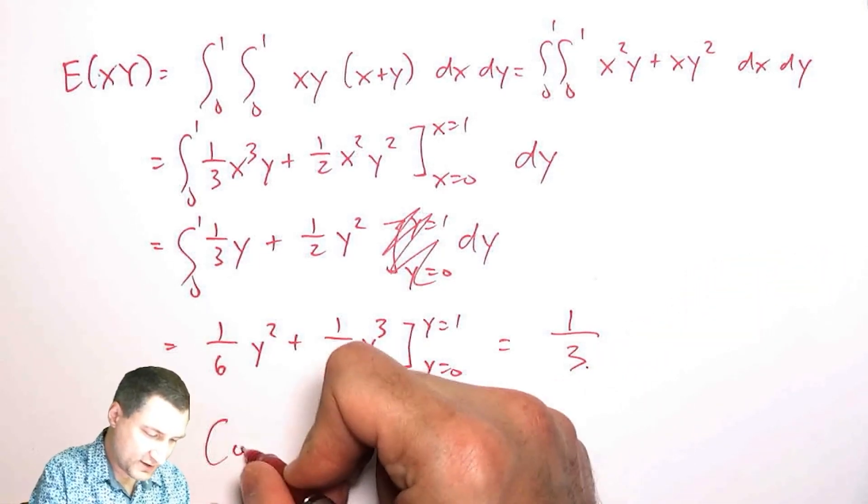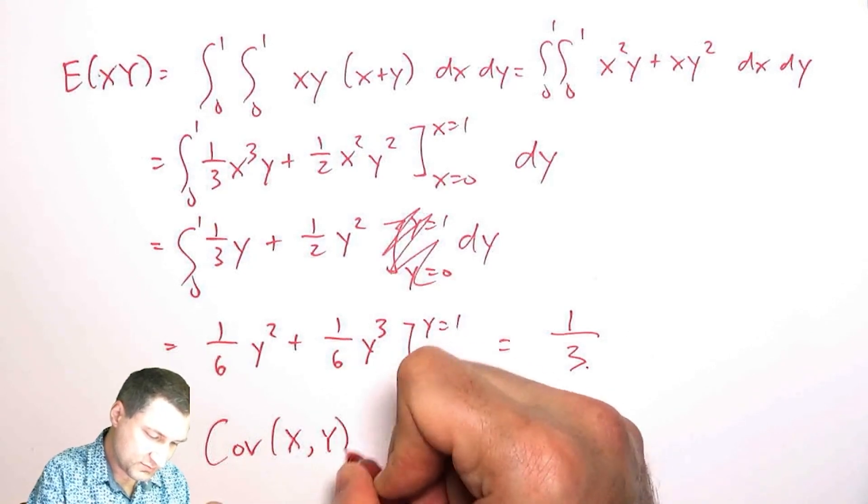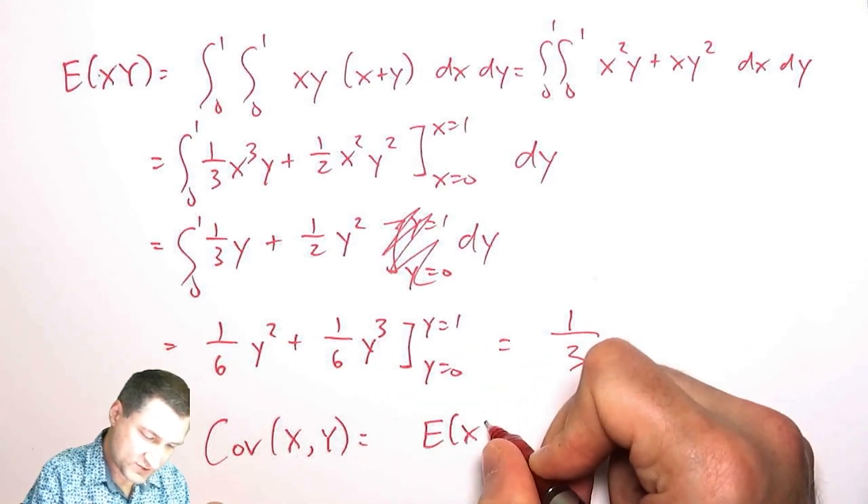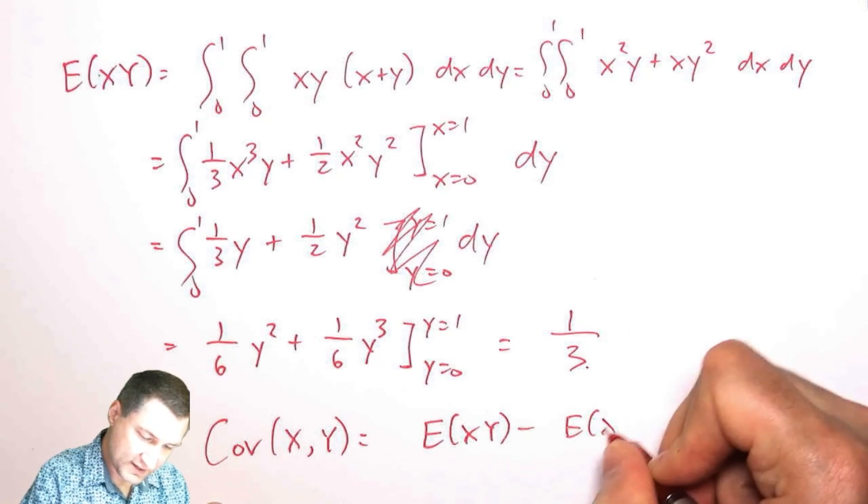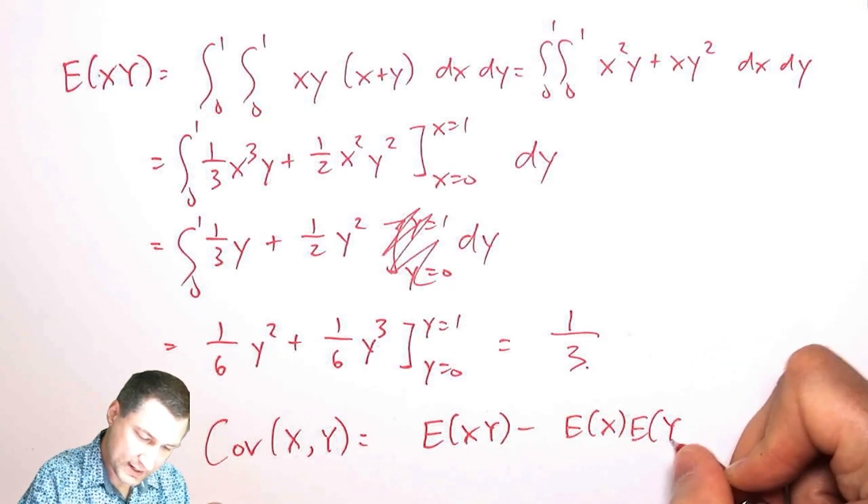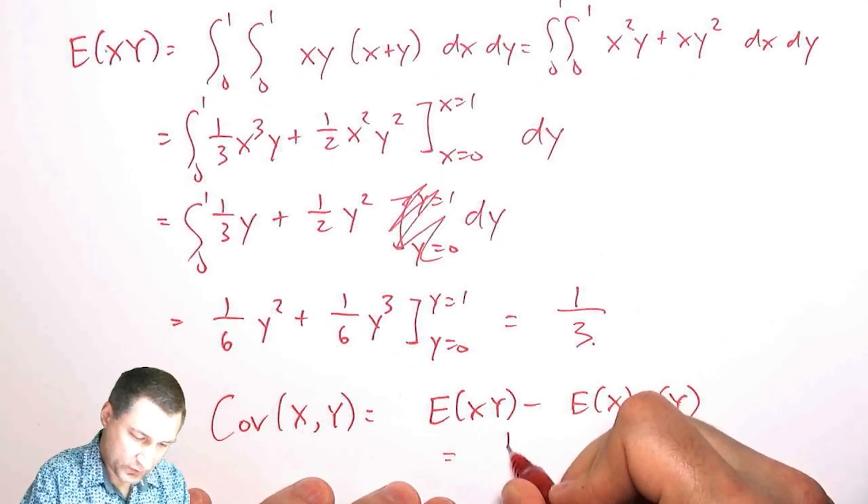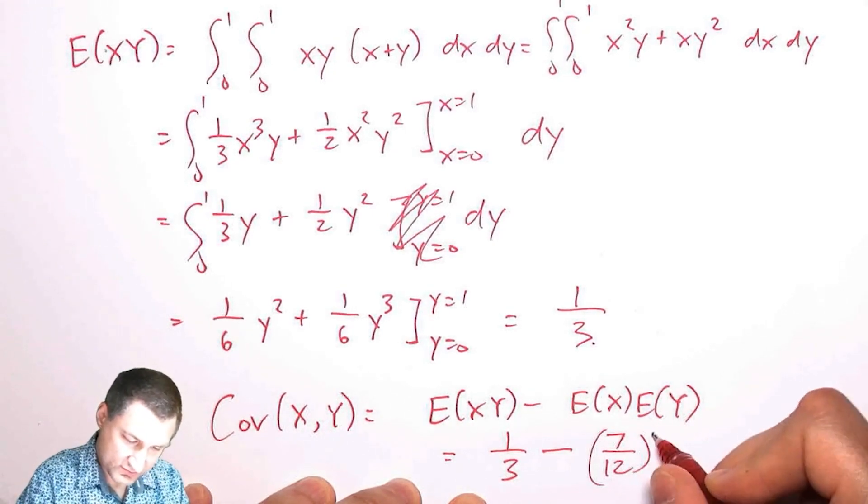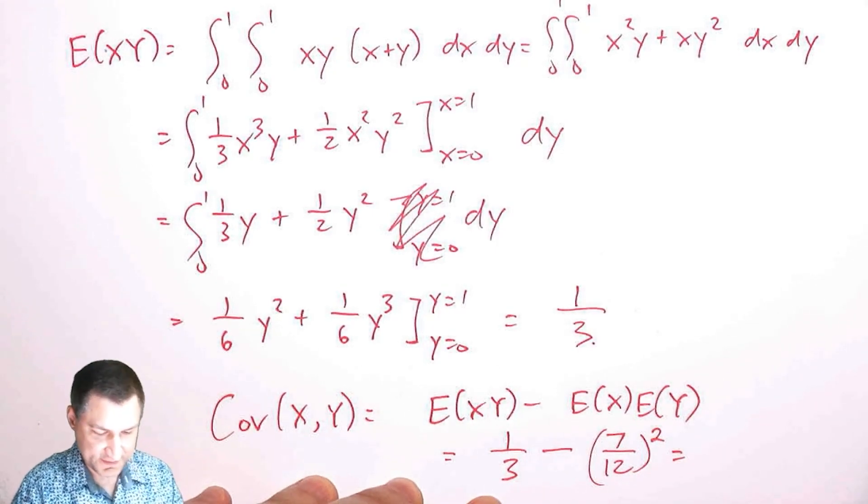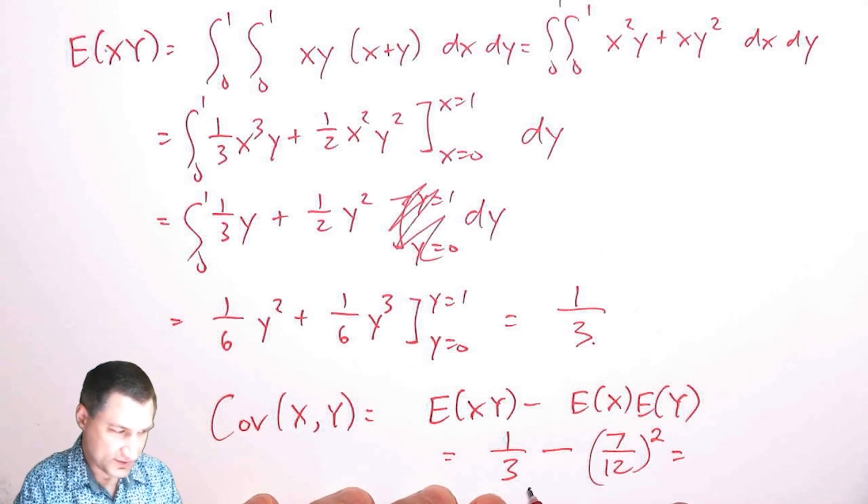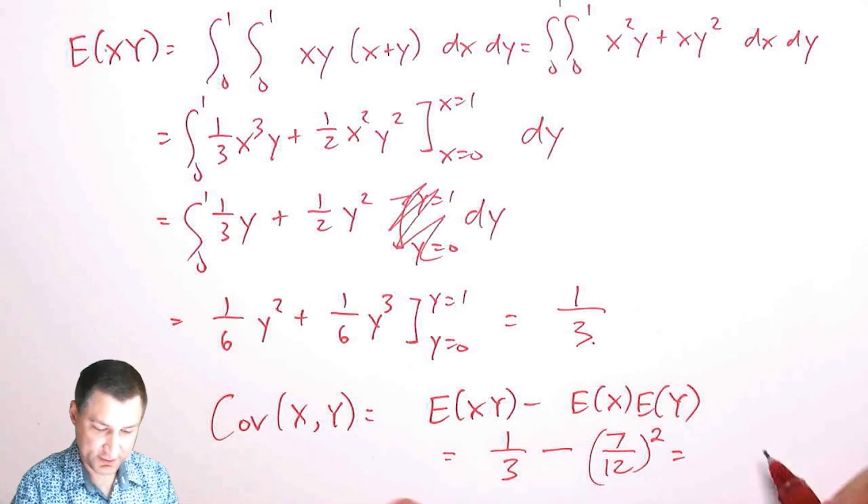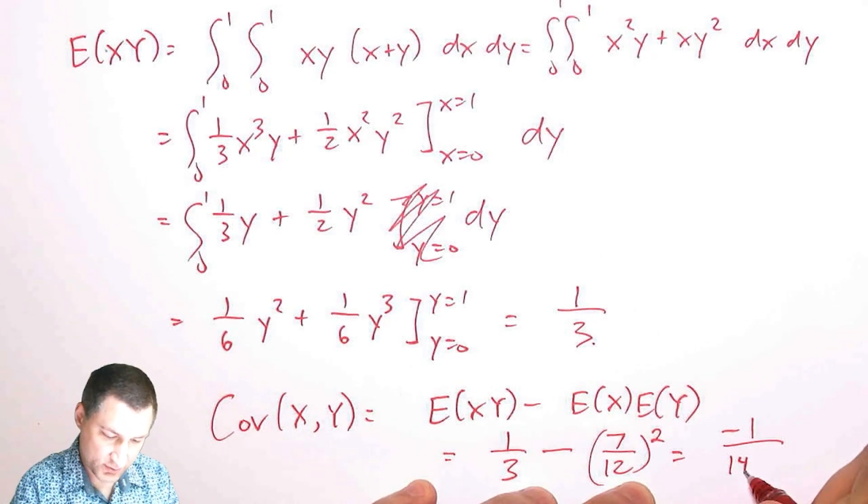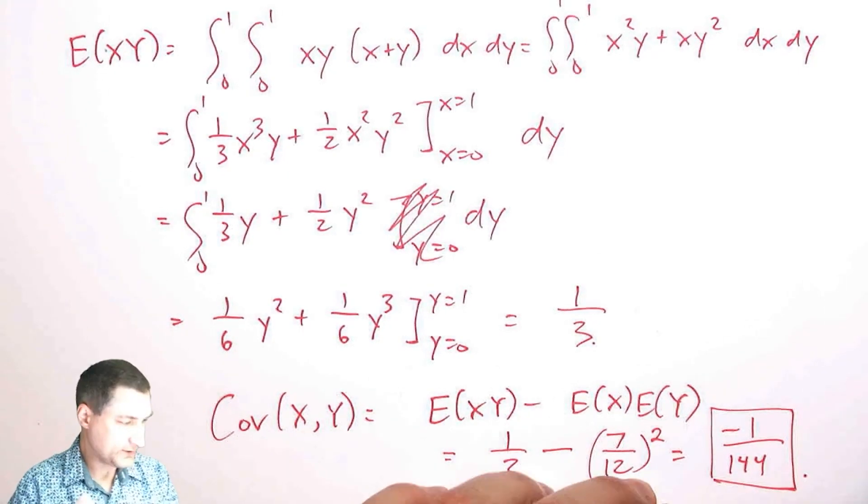So now I have the covariance is going to be expected value of XY minus the expected value of X times the expected value of Y, which is one third minus seven twelfths squared. And so I have to figure out what the actual number here is. This would be 48 over 144. This would be 49 over 144. So I get negative one over 144.